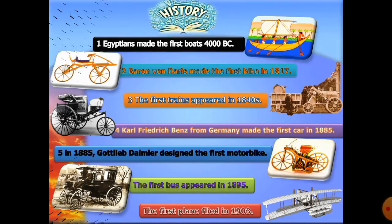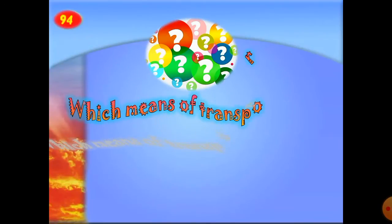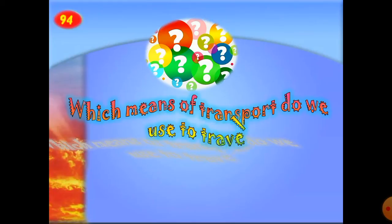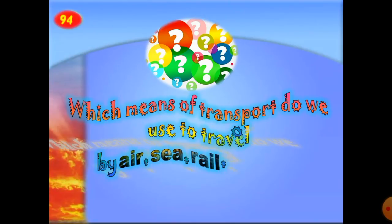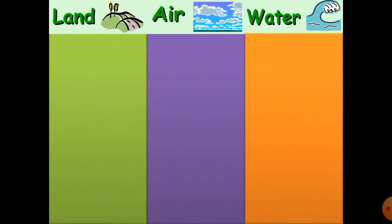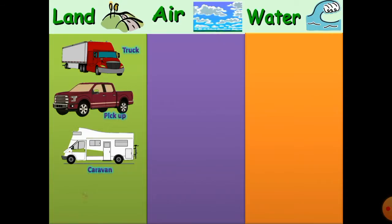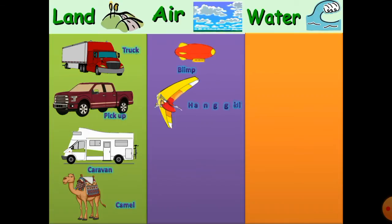On page 94 we have a special question: which means of transport do we use to travel by air, sea, rail, or road? We're going to limit it to land, water, and road. We have more examples: truck or lorry, pickup, caravan, and the Sahara ship — the camel.